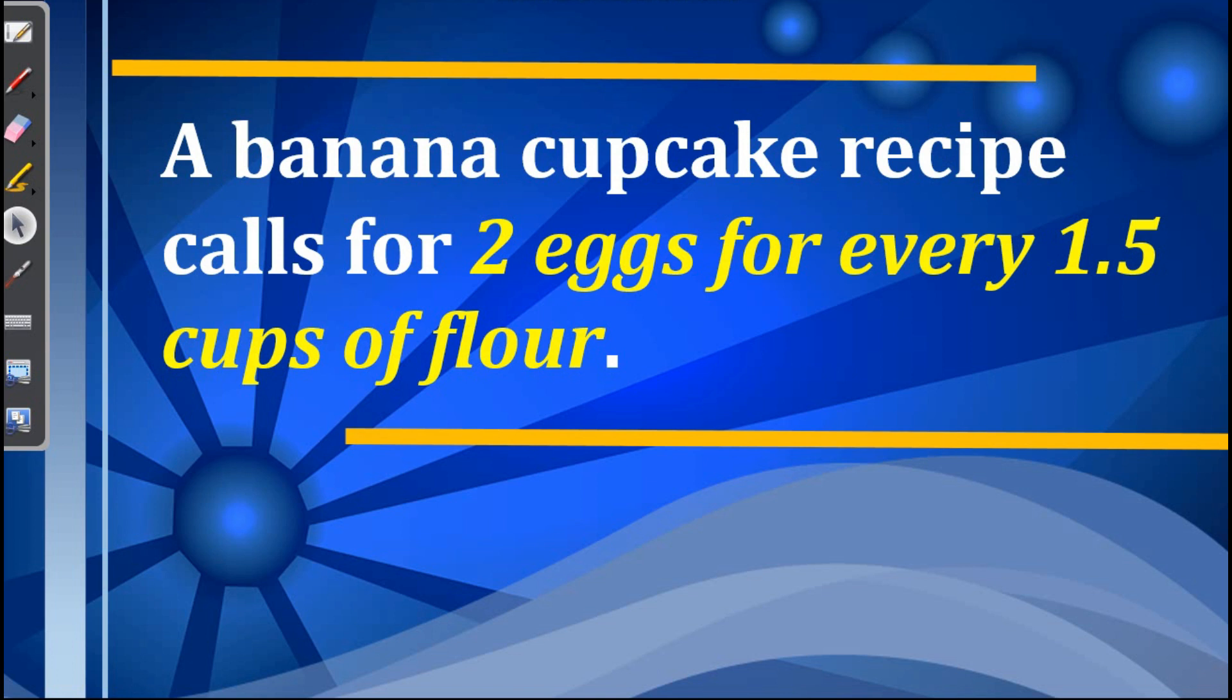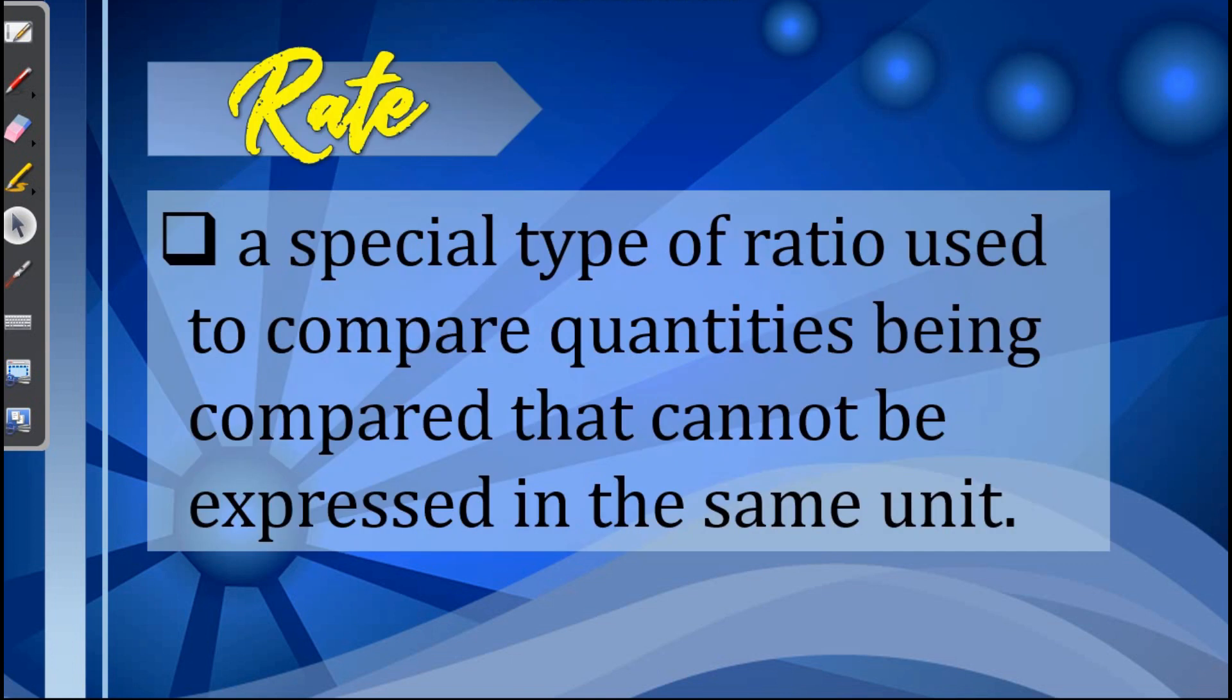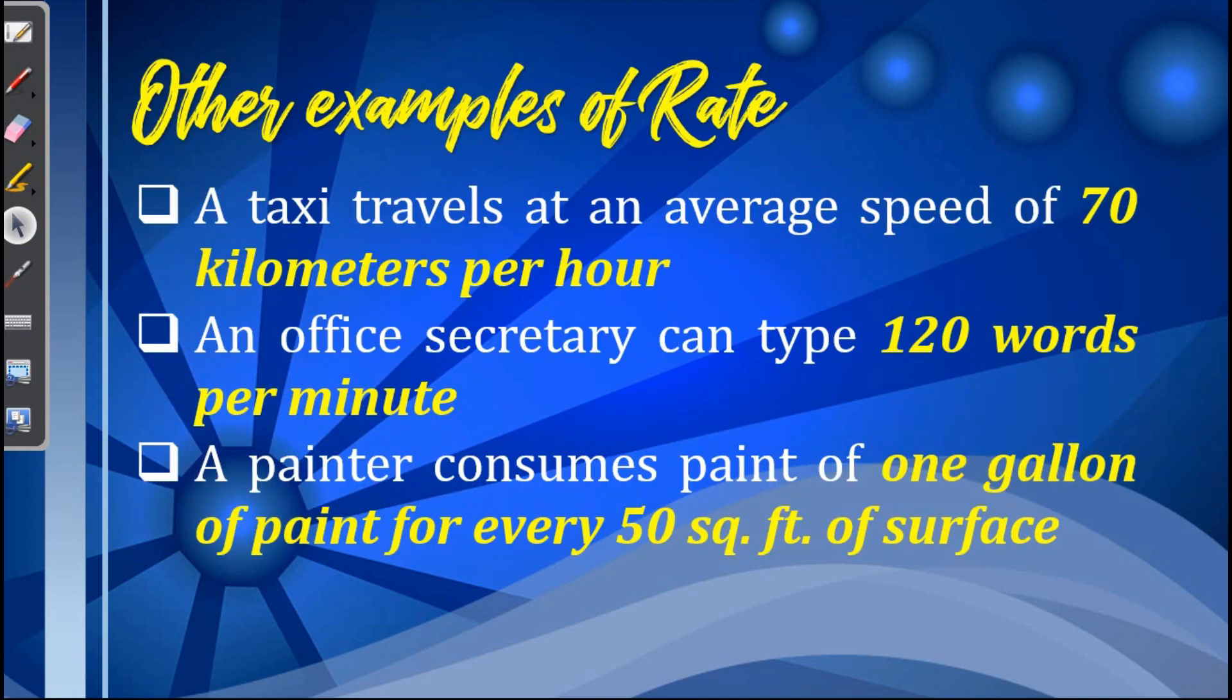Hence this is an example of a rate. So what is a rate? When we say rate, it is a special type of ratio used to compare quantities that cannot be expressed with the same unit. Take a look at the examples: a taxi travels at an average speed of 70 kilometers per hour; an office secretary can type 120 words per minute; a painter consumes one gallon of paint for every 50 square feet of surface.